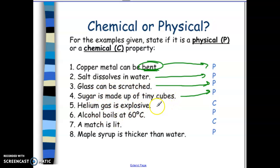Helium gas is explosive, is a chemical property, and that is looking at the flammability or combustibility. Alcohol boils at 60 degrees is a physical property. This is the boiling point of alcohol. A match is lit. So this is a chemical property, because we're looking at essentially the flammability again. And maple syrup is thicker than water is a physical property, and this is describing the viscosity.